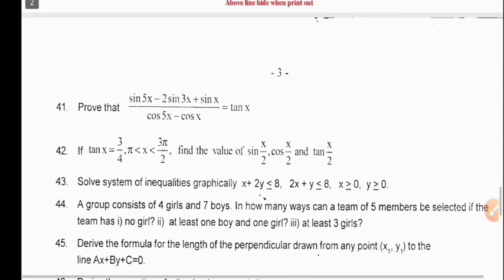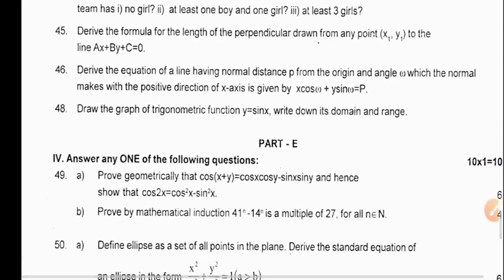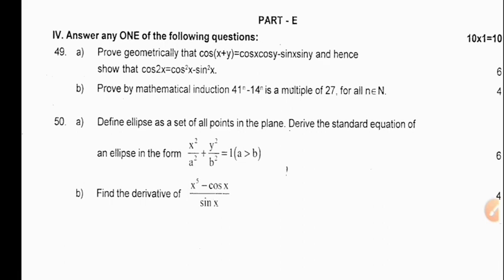In Part E, each question carries 10 marks. Each question has 2 parts, A and B. Part A carries 6 marks and Part B carries 4 marks, so each question carries 10 marks in total. There are 2 questions and you have to answer 1 question — meaning both A and B from the same question. You will get 10 marks. Total: 100 marks.